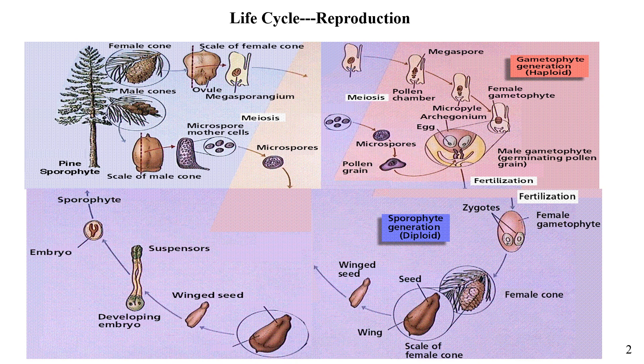The fertilized egg develops into an embryo enclosed in a seed. The seed is eventually released from the cone, germinates, and grows into a sporophyte tree.